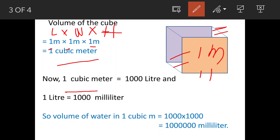Now we have to convert this 1 cubic meter into liters. So 1 cubic meter is equal to 1000 liters, and 1 liter is equal to again 1000 milliliters.